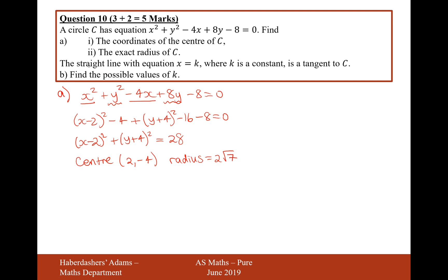Moving on to part B, the straight line with equation x equals k, where k is a constant, is a tangent to C. Find the possible values of k. You could do this by simultaneous equations or by visualizing the diagram. The line x equals k will just be a vertical line.